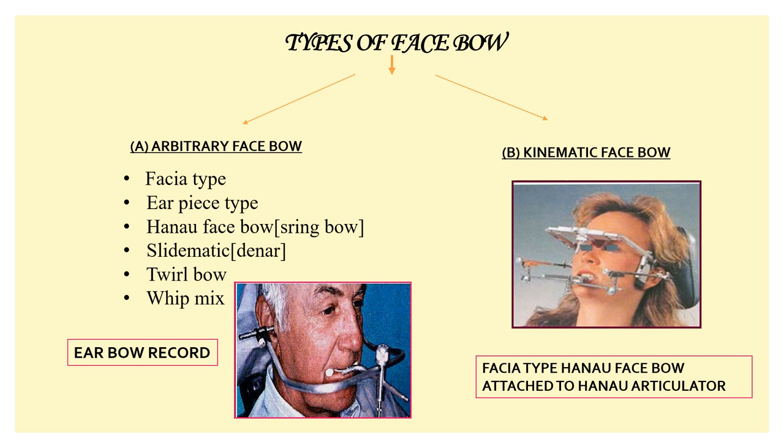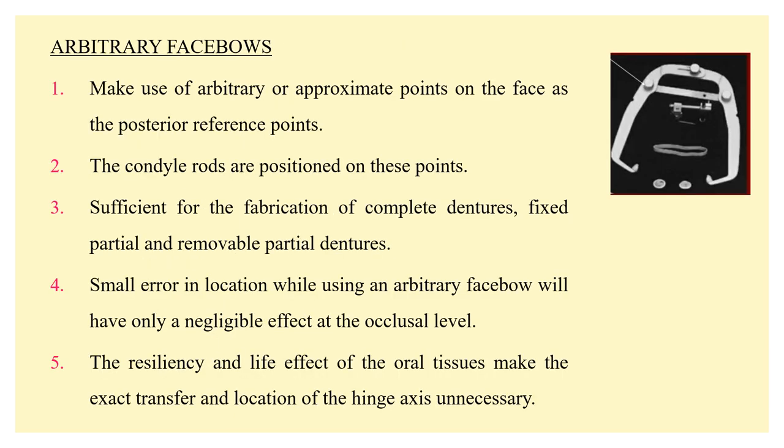There are basically two types of face bow: your arbitrary face bow and the kinematic face bow. In your arbitrary face bow you have the fascia type, the earpiece type, Hanau face bow, spring bow, Splimatic, Dinar, Twirl Bow, and Whip Mix. Looking at this image you can see an ear bow where the condylar rods are placed in the external auditory meatus — that is the earpiece type. The fascia type face bow uses an imaginary hinge axis right in front of the external auditory meatus where facial landmarks are used to record the face bow transfer.